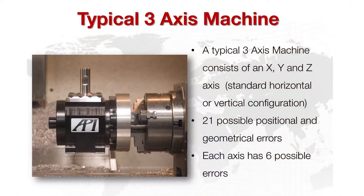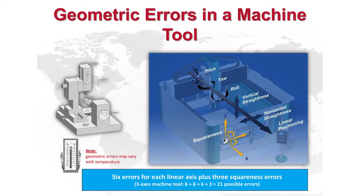A horizontal or vertical typical three-axis machine tool would have six errors for each one of the axes — X, Y, and Z — for a total of 18, plus three possible squareness errors, for a total of 21 errors.